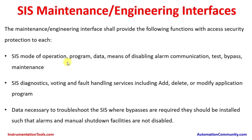All these activities shall be required to be done during plant operation — meaning they are also inline in operation. SIS diagnostics, voting, and fault handling services, including adding, deleting, or modifying the application program. There shall be features to do self-diagnostics on the safety instrumented system, and the program may be required to be modified while the process is in working condition. Where bypasses are required, they should be installed such that alarm and manual shutdown facilities are not disabled, and an alarm shall highlight that the particular system is in bypass.